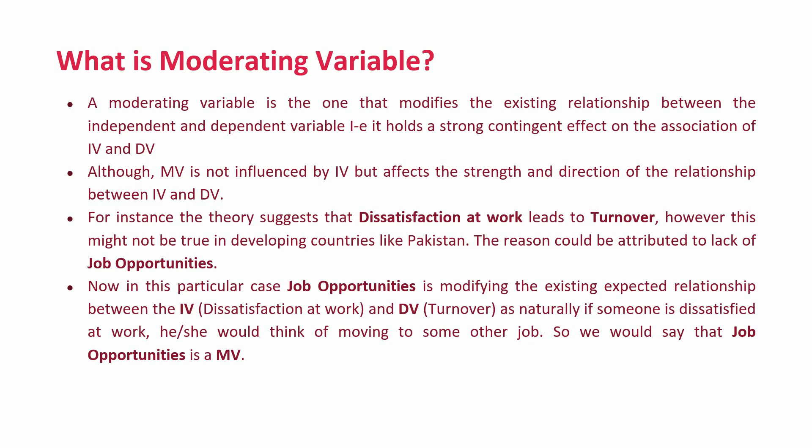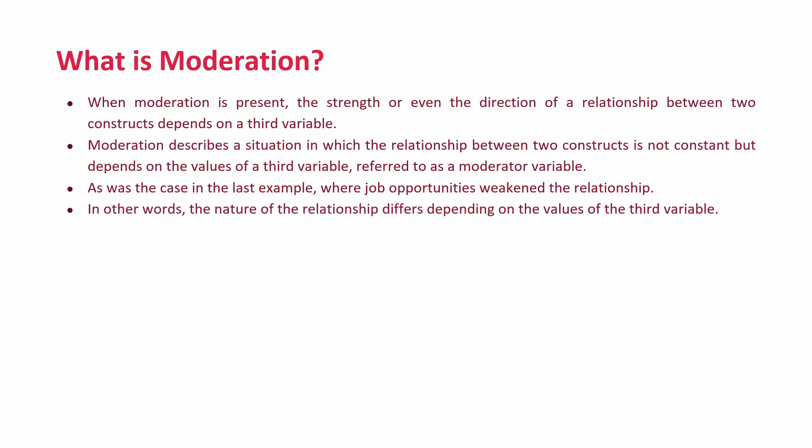Naturally, if someone is dissatisfied at work, they would think of moving to some other job. So we would say that job opportunities is a moderating variable. Moderation is present when the strength or even the direction of the relationship between two constructs depends upon a third variable — the moderating variable. Moderation describes a situation in which the relationship between two constructs is not constant but depends on the values of a third variable, referred to as a moderator variable, as was the case where job opportunities weakened the relationship.